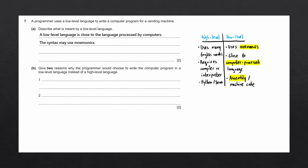Question B asks for two reasons why the programmer would choose a low-level language instead of a high-level language. First, low-level languages do not require a compiler or interpreter. Second, since low-level languages are close to computer-processed languages, they execute more quickly as there is less translation needed. Other valid reasons include: low-level languages can directly manipulate hardware, can use specialized hardware, are more memory efficient, and programs don't need to be portable.